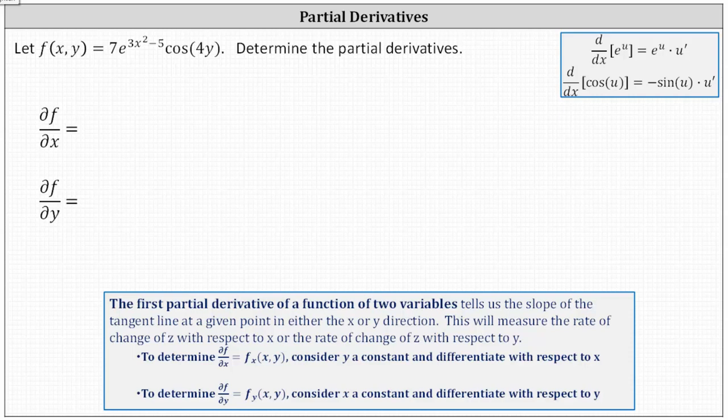f of x, y equals seven times e to the power of the quantity three x squared minus five times cosine four y. To determine the partial derivatives, we first find the partial of f with respect to x. To do so, we consider y a constant and differentiate with respect to x.